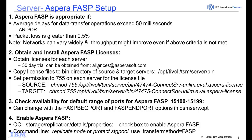You can obtain a try-and-buy license by sending an email to alliances@asperasoft.com. Once you receive those licenses, you'll copy them into the bin directory on both the Spectrum Protect source and target servers. That path is /opt/tivoli/tsm/server/bin on the Linux servers.